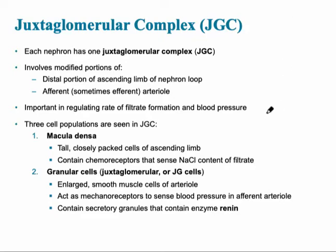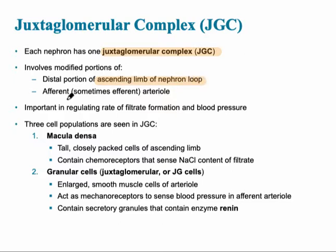Each nephron, which is the filtering unit of the kidney, has one juxtaglomerular complex, also called the juxtaglomerular apparatus. This is specifically located at the distal end of the ascending limb, where it starts to ascend in a superior direction, and it's the specific point where it comes in contact with the afferent, or sometimes the efferent arteriole. The purpose of the juxtaglomerular apparatus is that it helps to regulate the rate of filtrate formation and blood pressure.